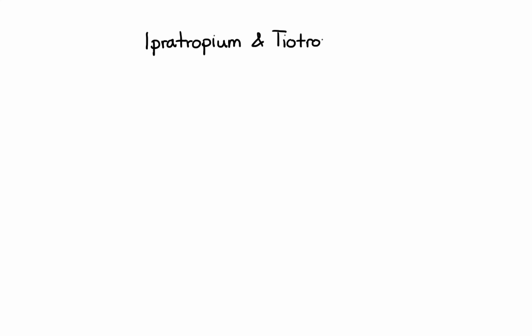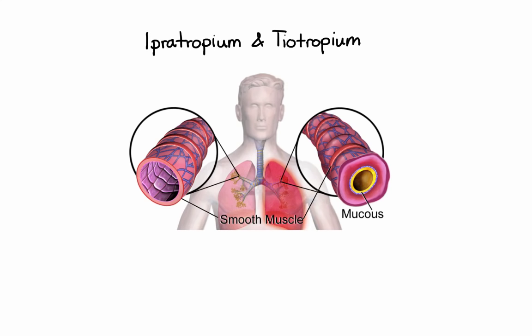Other medications in the anti-muscarinic group are ipratropium and tiotropium. These agents block muscarinic acetylcholine receptors without specificity for subtypes, resulting in decreased contractility of smooth muscle in the lungs, which leads to bronchodilation and reduction of mucus secretion. Tiotropium and ipratropium are administered by inhalation for maintenance treatment of bronchospasm in patients with COPD. Ipratropium also comes in a nasal spray formulation often used for treatment of rhinorrhea.